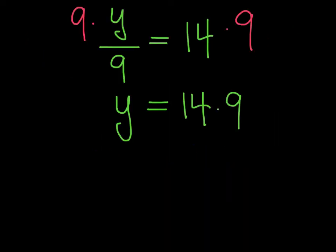By multiplying both sides of the equation by 9, I have successfully isolated my variable. I now have an equation that reads y equals 14 times 9.